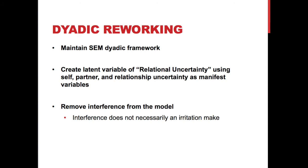Finally, I'd like to remove interference from this model. The major implication from the original model is that interference does not necessarily make an irritation — every time your partner interferes with your everyday goals, it's not necessarily going to lead to an irritation; it could just be something we don't weight heavily. It would also clutter the model, and importantly it wasn't found to be supported. So relational uncertainty is the main thing to stick with in this model.